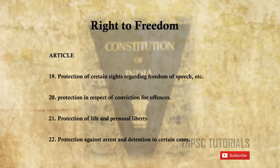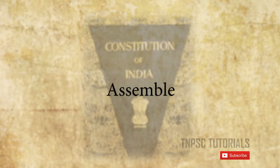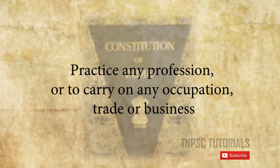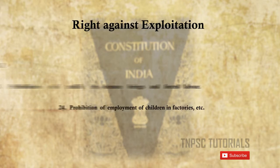Right to Freedom covers Articles 19 to 22. Article 19 provides protection of six rights regarding: first, freedom of speech and expression; second, assembly; third, association; fourth, movement; fifth, residence; and sixth, profession. Article 20 deals with protection in respect of conviction for offences. Article 21 deals with protection of life and personal liberty. Article 22 deals with protection against arrest and detention in certain cases.